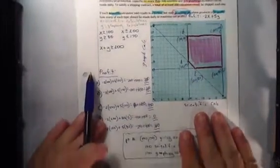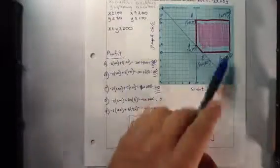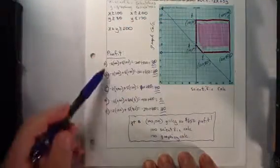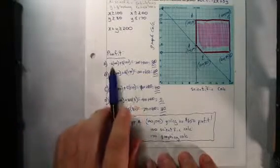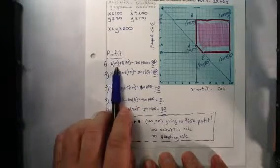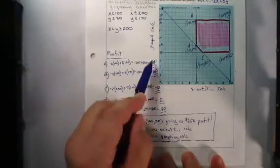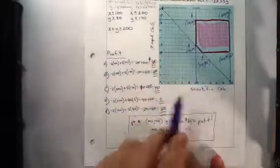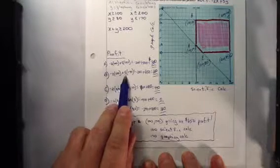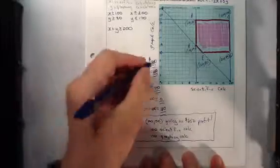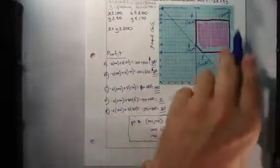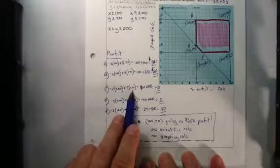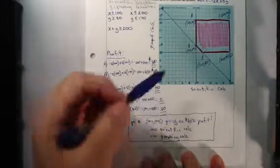Now that we've got those constraints, points, and feasible region, we can calculate profit for each of those points and find where the maximum profit is located. For point A, negative 2 times 100 plus 5 times 100 will yield $300 profit. Point B, 100,170: negative 2 times 100 plus 5 times 170 yields $650 profit. Point C, the far corner, 200,170: negative 2 times 200 plus 5 times 170 will yield $450 profit.